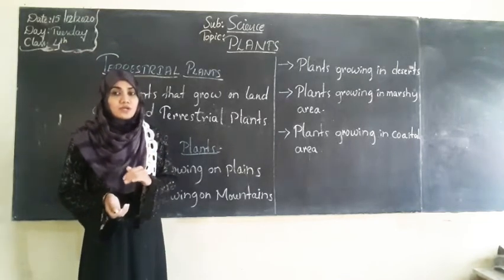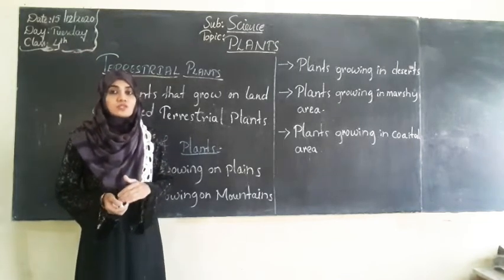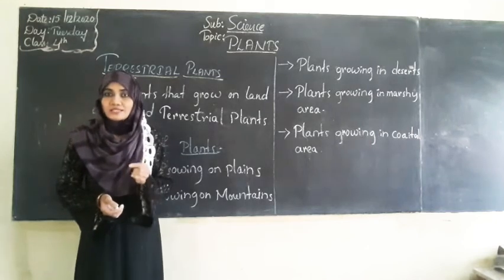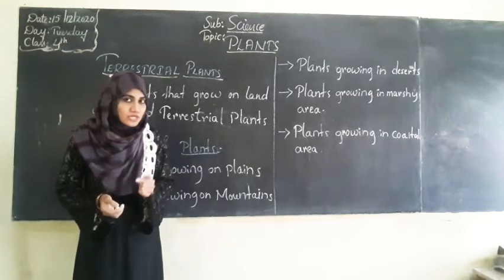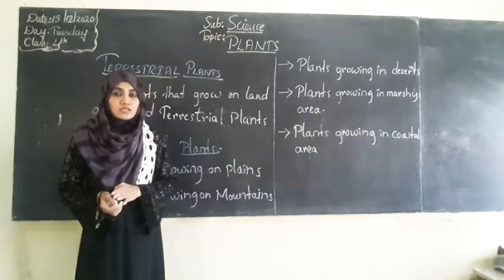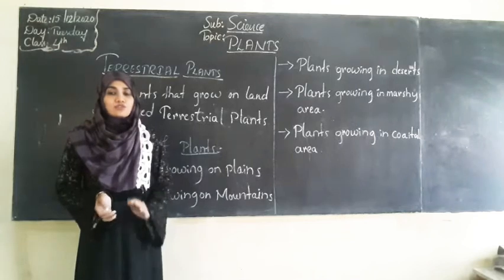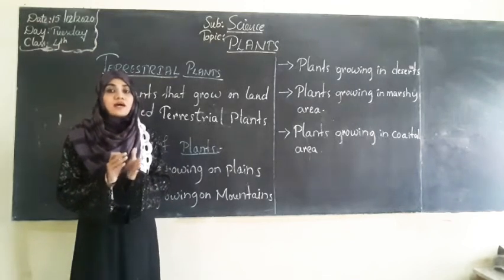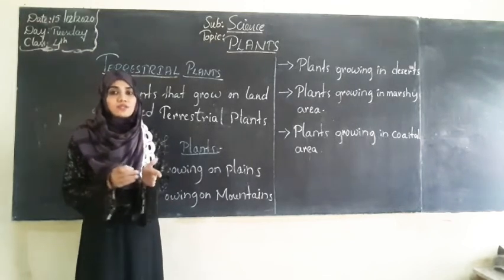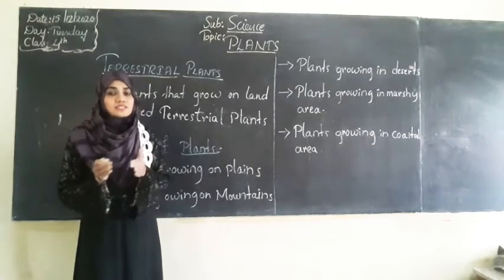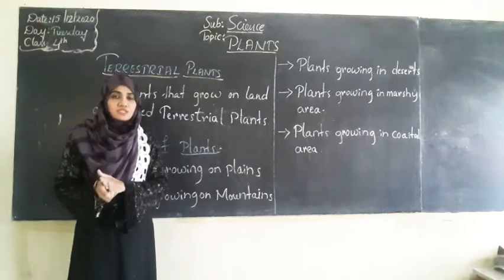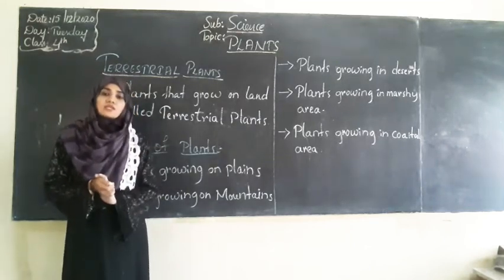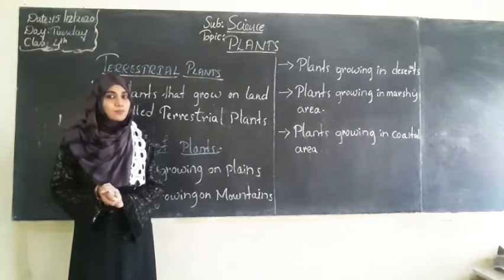In that chapter, we came across the kitchen house of the plant, that is the leaf — its structure, its function — and we also studied about the importance of plants and interdependence between plants and animals. But in this chapter, we will study all about plants.